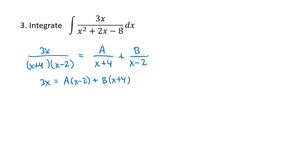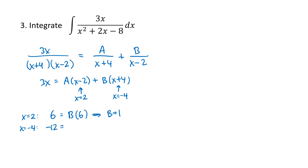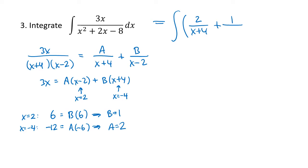Multiplying both sides gives a times x minus 2 plus b times x plus 4. We plug in x equals 2 to get 6 equals b times 6, so b equals 1. We plug in x equals negative 4 to get negative 12 on the left-hand side and a times negative 6, which means a equals positive 2. So our integral is 2 over x plus 4 plus 1 over x minus 2, giving us 2 times the natural log of x plus 4 plus the natural log of x minus 2, plus C.